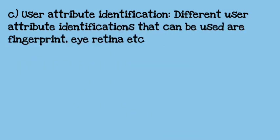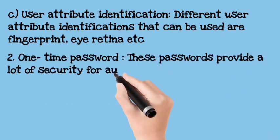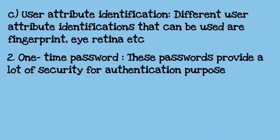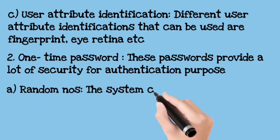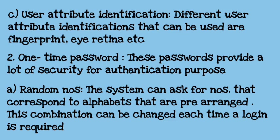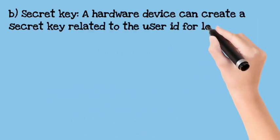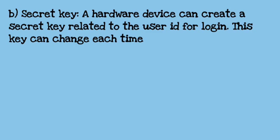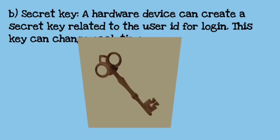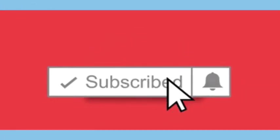Third, we have user attribute identification. For example, we use fingerprints or eye retina — this is biometrics. I will give you a link in the description box. There you can also see one-time password as a second authentication method. Here the system gives us some alphanumeric characters arranged beforehand. Every login time the numbers change. There is also a secret key: our hardware device tells us what we need to log in, and this key also changes.